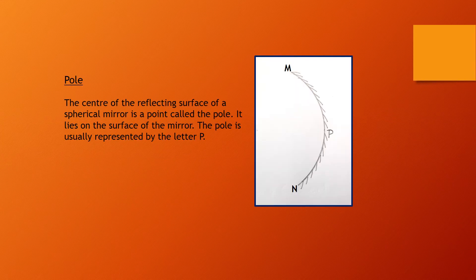The center of the reflecting surface of a spherical mirror is a point called the pole. It lies on the surface of the mirror and is usually represented by the letter P. In the picture, MN represents a concave mirror, and the center point represented by the letter P is the pole of the spherical mirror.